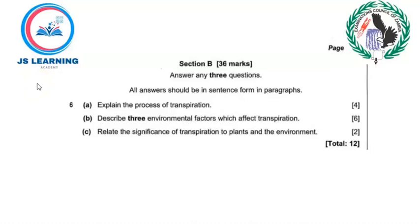Good day viewers, welcome to another biology lesson. This is your presenter Mr. So. I've got a question that came in Biology Paper 2, Section B. In Section B there are equations. Let us look at the questions: Question A — explain the process of transpiration. Question B — describe three environmental factors which affect transpiration. Question C — relate the significance of transpiration to plants and the environment.